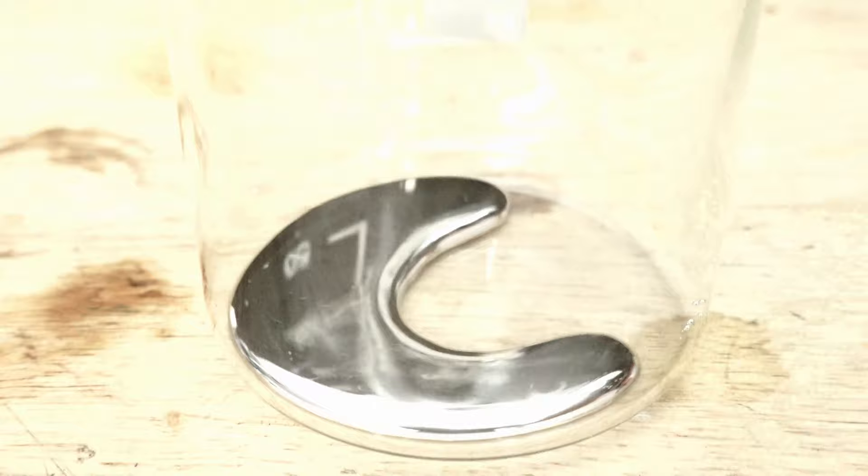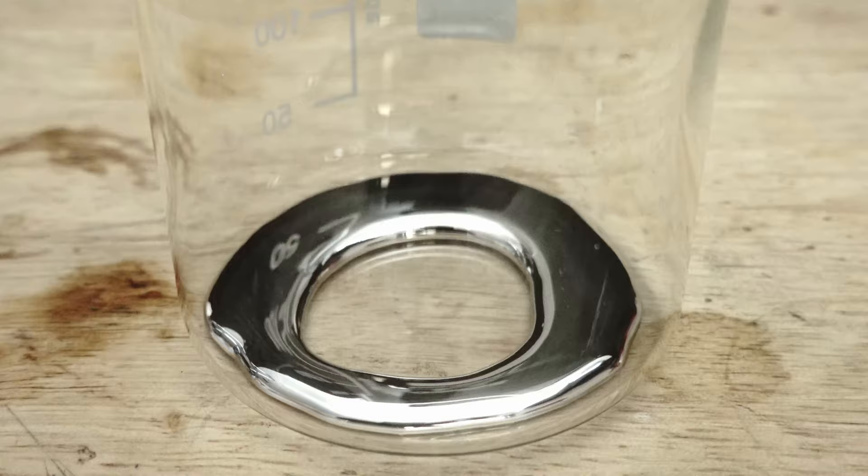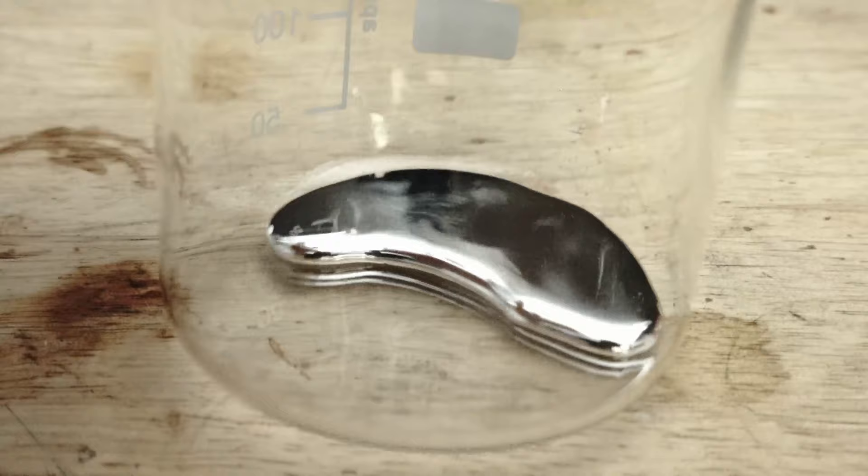And here is our final product, pure mercury. Here I have around 88 grams which represents a 75% yield, which is not bad considering theoretical is about 98 grams or 85%.